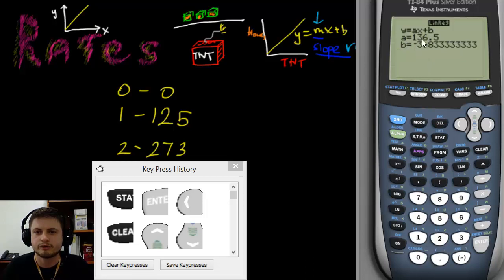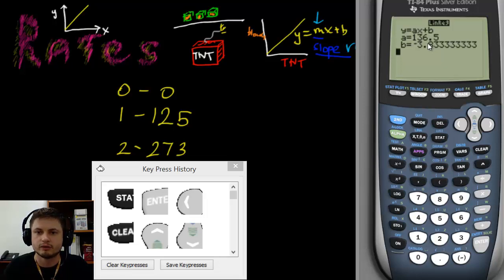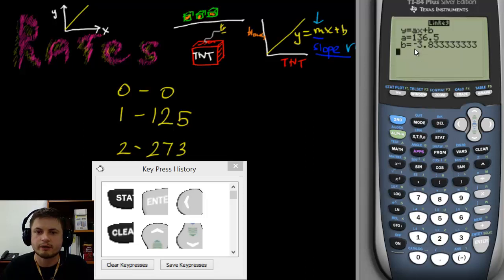It will ask for your x-list — keep it as L1 — and y-list as L2. Press CALCULATE and it does the magic. It gives you: y = ax + b, where a is 136.5 and b is minus 3.83. We know the y-intercept should really be zero, so it's not perfectly accurate, but that's okay. The key value is a — our slope — which is our rate of change. This is most likely a quadratic or possibly exponential function, but for now this is good enough.